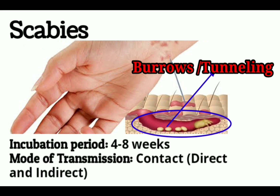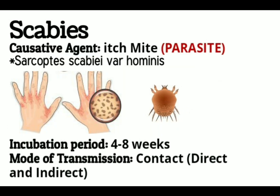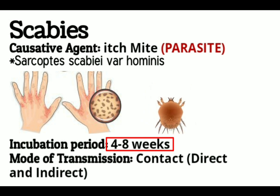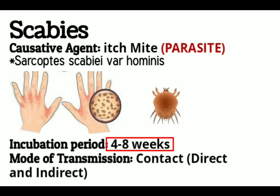The most common symptoms of scabies are intense itching and a pimple-like skin rash. That pimple-like skin rash is the most common sign of scabies. Regarding the incubation period, the incubation period of scabies is 4 to 8 weeks. Some sources say 4 to 6 weeks, but up to 4 to 8 weeks according to the CDC.